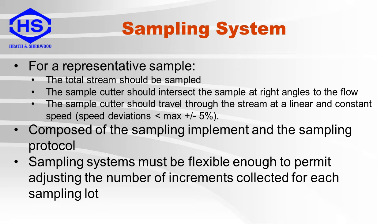A sampling system is composed of the sampling implement and the sampling protocol. Sampling systems must be flexible enough to permit adjusting the number of increments collected for each sampling lot. The number of increments can affect the precision or the variance.